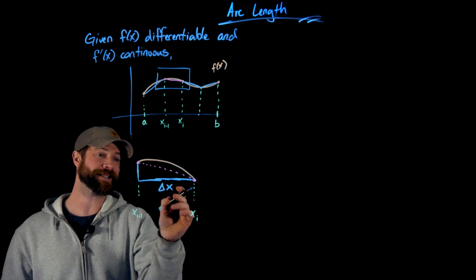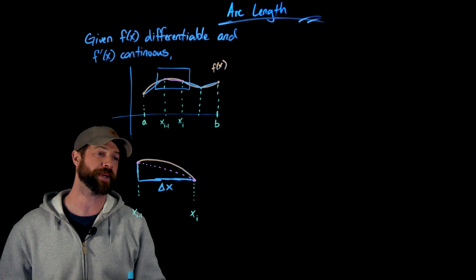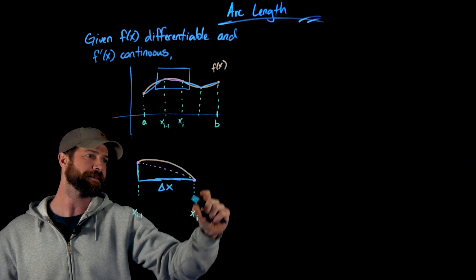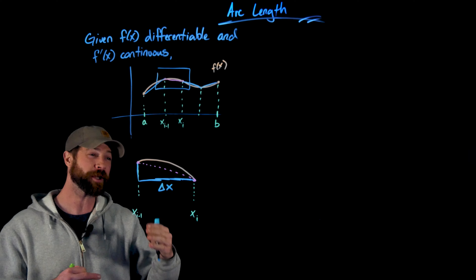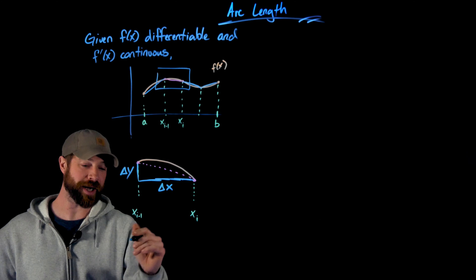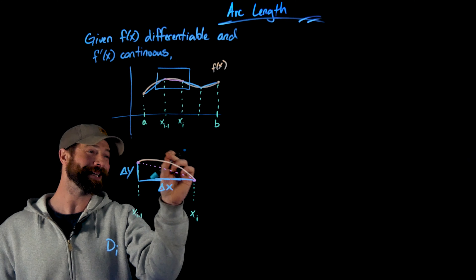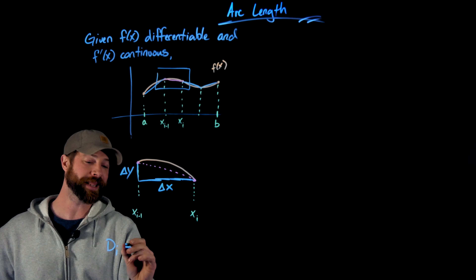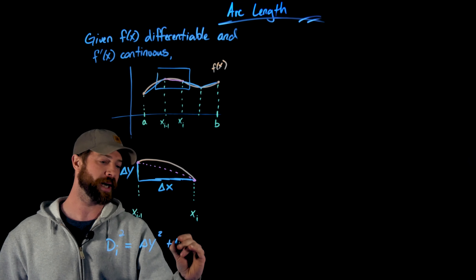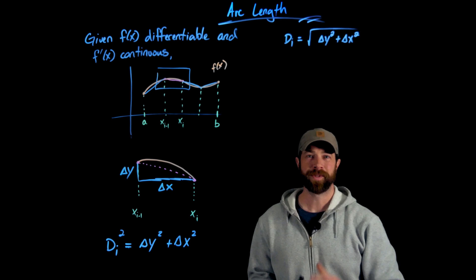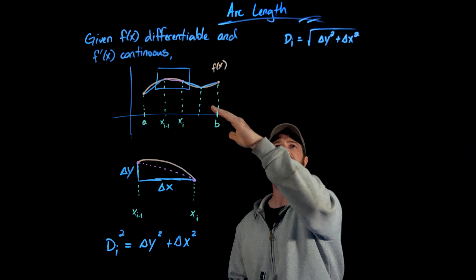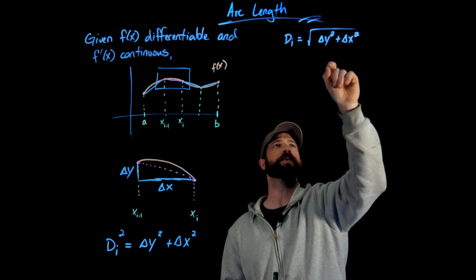Delta x is the representative size of each of the intervals given the number of subintervals. This vertical distance we could call f(x_i minus 1) minus f(x_i), but I'm just going to call this a change in y, delta y. So the approximating distance on this interval — approximating the curve with a straight line — gives us: distance squared equals delta y squared plus delta x squared. Taking the square root of both sides, the distance is the square root of delta y squared plus delta x squared.